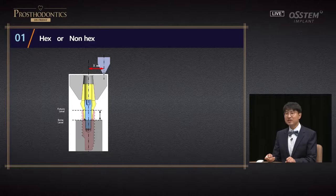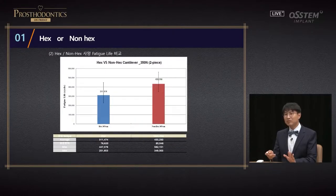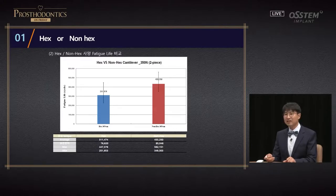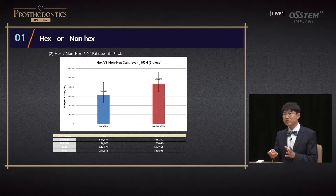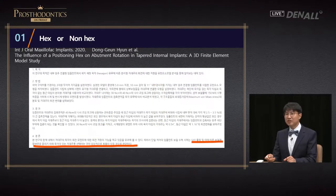This is a research done by Austin Research Center. In the cantilever area, cyclic loading was applied. In the area where cantilever was applied, there was a difference of 5 mm. Non-hex abutments showed better fatigue life. Because non-hex abutments have a bigger contact surface, it may be more unfavorable in terms of positioning, but it does have these advantages.